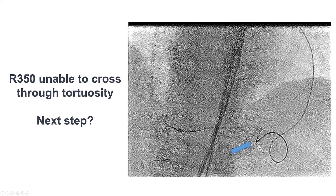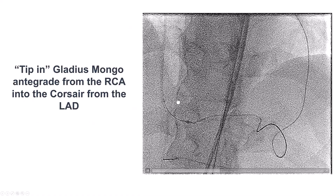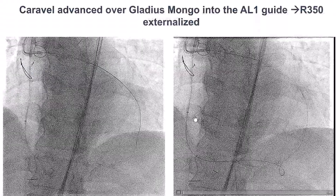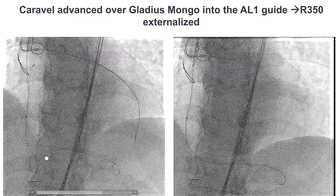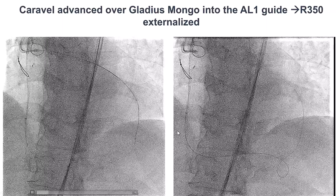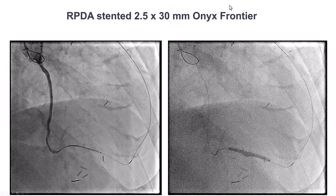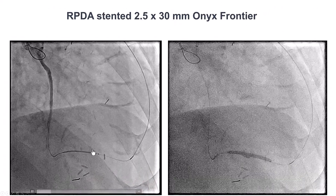The next plan was to advance an R350 externalizer to stent the PDA. Unfortunately, because of significant tortuosity on the distal LAD and the epicardial collateral, we were unable to get the R350 through. So instead, we went antegrade with the Gladius Mongo wire and were able to tip it into the retrograde Corsair microcatheter. After doing that, we advanced the Caraval microcatheter antegrade, and were able to get the wire all the way into the saphenous vein graft and externalize an R350 guide wire. We finally established our retrograde system and were able to deliver a 2.5 by 30-millimeter drug-eluting stent into the PDA, covering the area of dissection.